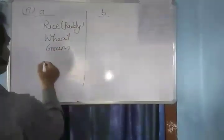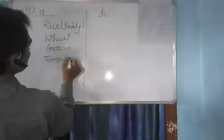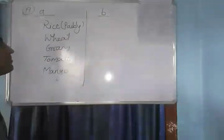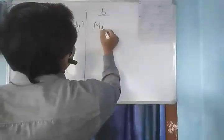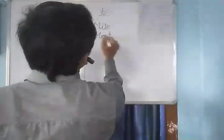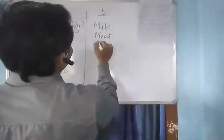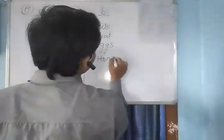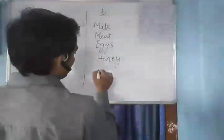Continuing with plant-based foods: vegetables like tomato, and any fruit like mango. For part B, five food materials which come from animals: milk, which is the common food and first choice of vegetarians; then meat; then eggs; then honey; and any milk product like paneer.